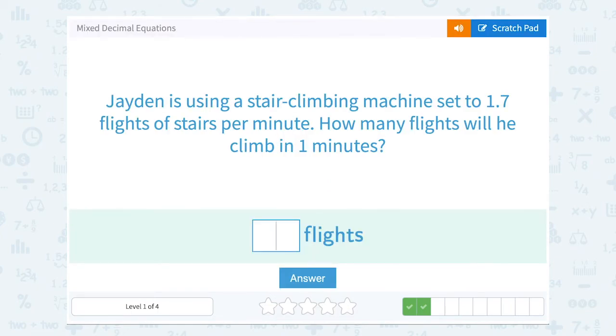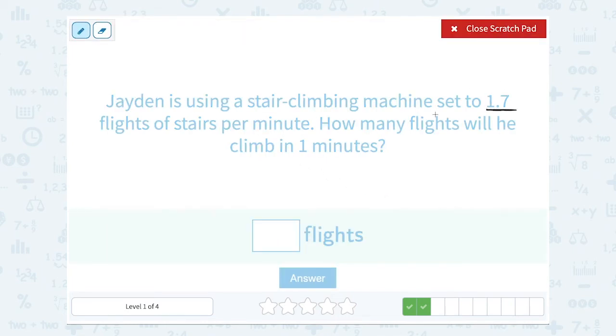Jayden is using a stair climbing machine to set 1.7 flights of stairs per minute. How many flights will he climb in 1 minute? Well, when you see that word per, per means for each one. So if he's climbing 1.7 stairs per minute, that means each one minute he's climbing 1.7 flights of stairs. Since they're only asking us about one minute, he must have climbed 1.7 flights of stairs.